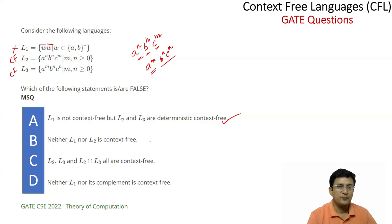This is the characteristic of context-free. As for statement B — neither L1 nor L2 is context-free — L1 is context-free but L2 is not context-free. That is why this statement is false.